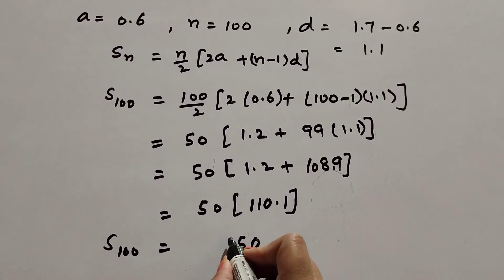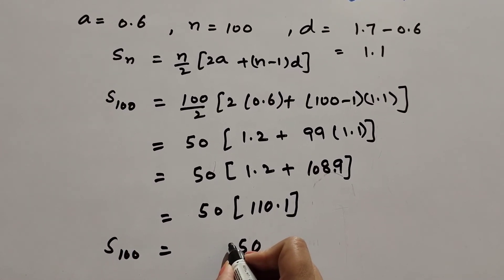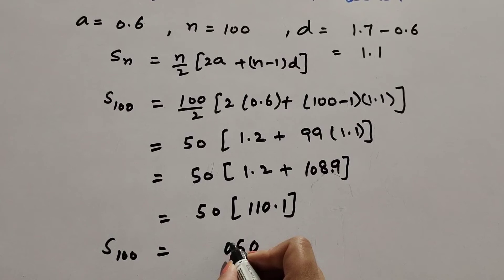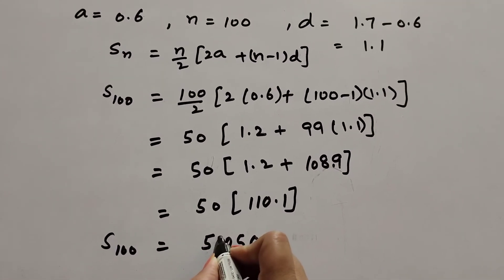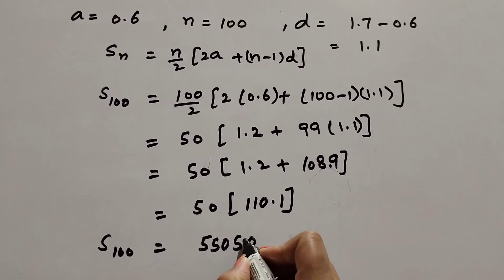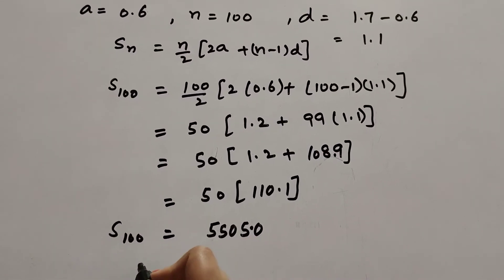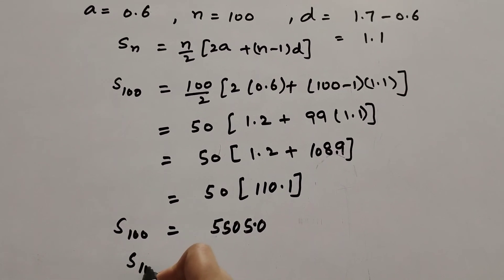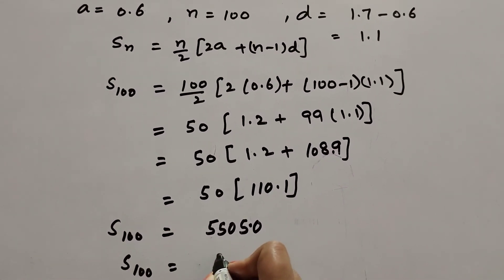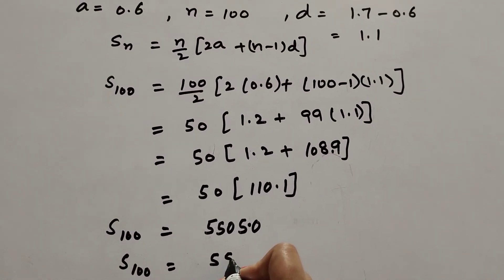So the sum of 100 terms is equal to 5505.